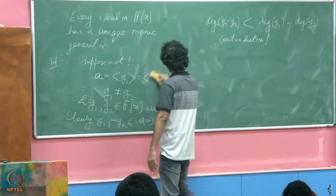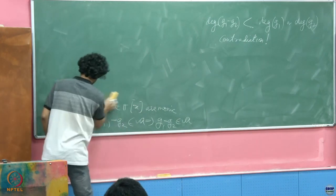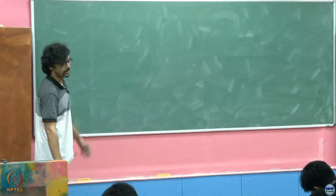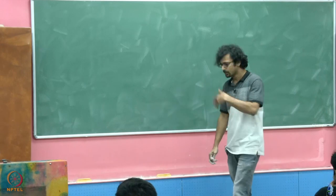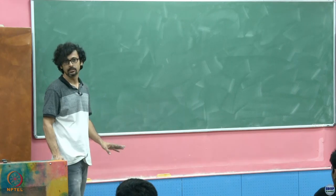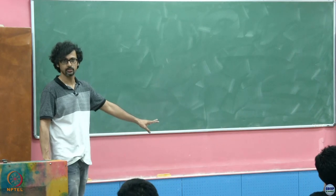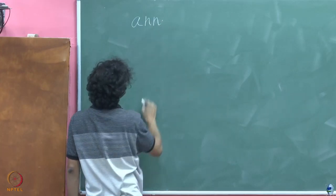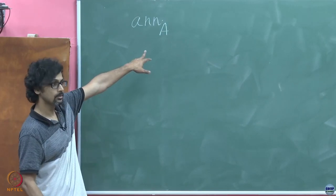So now we are going to go back to looking at operators or matrices and describe certain special ideals. The term I am going to use is annihilator — forget about the use of this term in connection with dual spaces, this has got nothing whatsoever to do with those objects. What we are going to talk about is the annihilating ideal of A, where A is an operator.